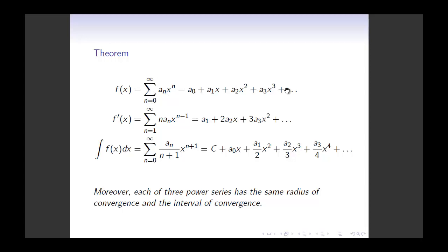Let's start with the longhand notation. When I take the derivative of f, the derivative of a sub 0 is 0 (it's a constant). Derivative of a sub 1 times x is a sub 1. Derivative of a sub 2 times x squared is 2 times a sub 2 times x. Derivative of a sub 3 times x cubed is 3 times a sub 3 times x squared, and so on. In sigma notation, I differentiate x to the power n to get n times a sub n times x to the power n minus 1, and the summation starts from 1 because the constant term vanishes.